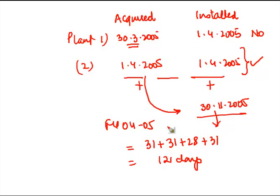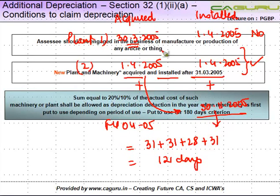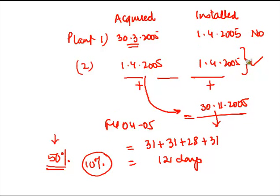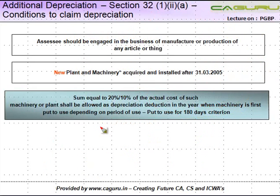Whenever the asset is put to use for less than 180 days, depreciation is allowed at 50% of the normal rate. So in this case — where the asset was used for only 121 days — the additional depreciation shall be allowed at 10%. Whereas if the asset is used for 180 days or more, it will be allowed at the full rate of 20% of the actual cost of such machinery or plant.